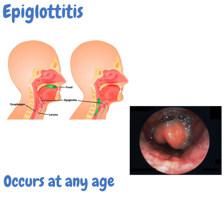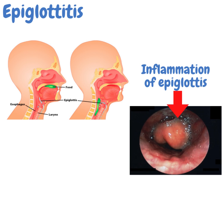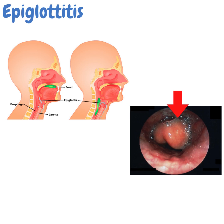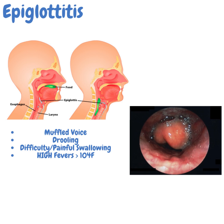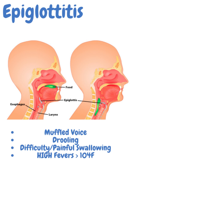Epiglottitis can occur at any age — not just six months to four years like croup. It's an inflammation of the epiglottis, and it begins suddenly. These kids usually have a muffled voice and significant drooling because they're unable to swallow due to pain and because their epiglottis is so swollen. They have really high fevers, like 104 degrees and above.